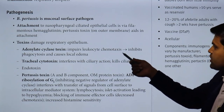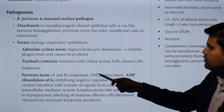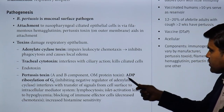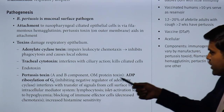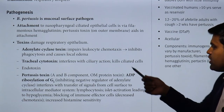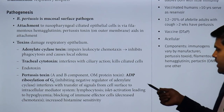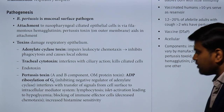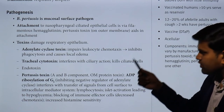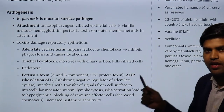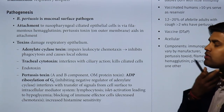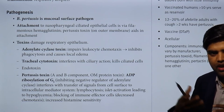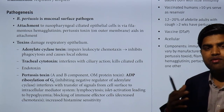These toxins help in different ways. Adenyl cyclase toxin impairs leukocyte chemotaxis, inhibits phagocytosis, and causes local anemia. Tracheal toxin interferes with ciliary action and kills ciliated cells; there is endotoxin. Pertussis toxin has A and B components, OM protein — the toxin helps in ADP ribosylation of Gi, inhibiting negative regulation of adenyl cyclase, interfering with signal transfer from the cell to the intercellular-mediated system, causing lymphocytosis, islet cell activation leading to hyperglycemia, blocking of immune effector cells, decreased chemotaxis, and increased histamine sensitivity. As a whole, these toxins block your cilia. The cilia get damaged and there is a lot of secretion collected in the throat — the irritation is continuous and that secretion does not clear, so you will have a continuous cough.